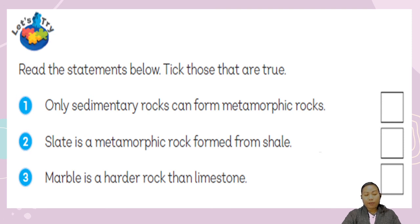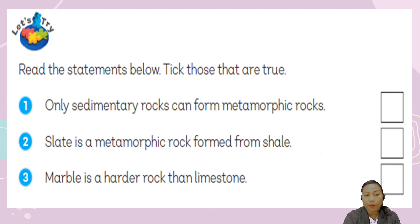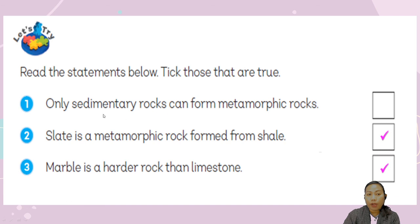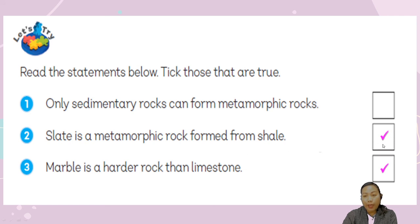Let's have the answers. Number one is wrong because of the word 'only' — metamorphic rock comes from both igneous rocks and sedimentary rocks, combined with heat and pressure. Number two is correct: slate is a metamorphic rock formed from shale. Number three is also correct: marble is a harder rock than limestone.